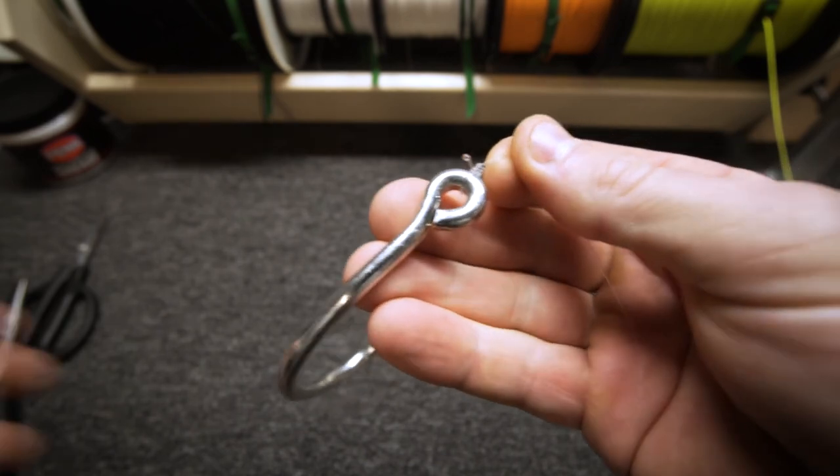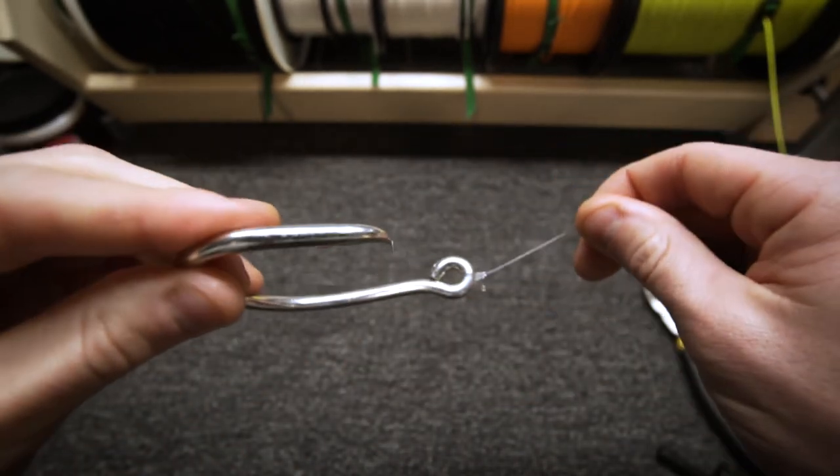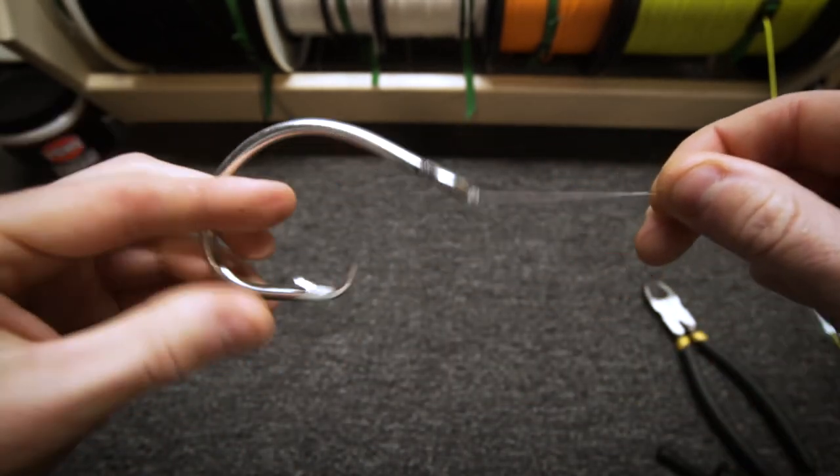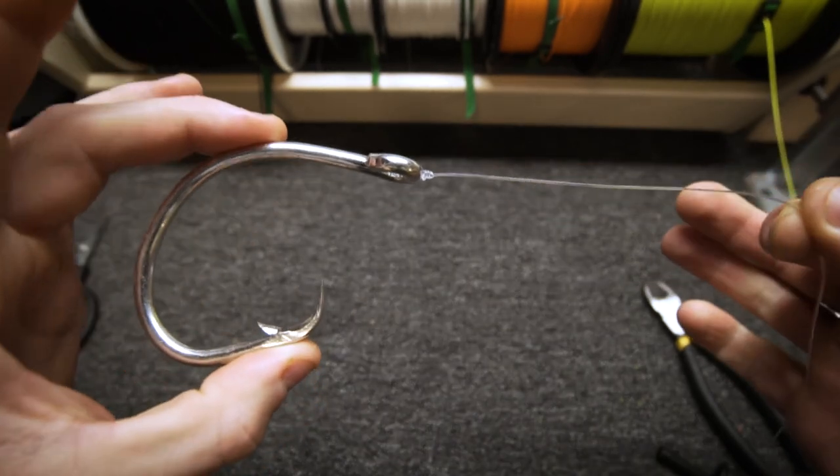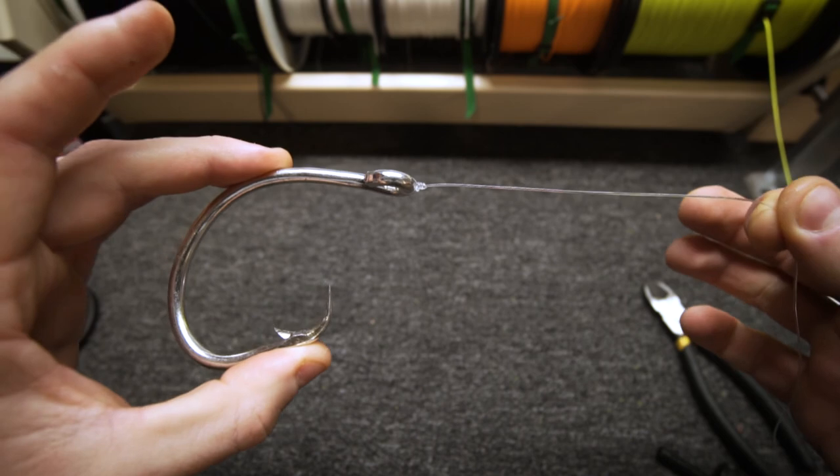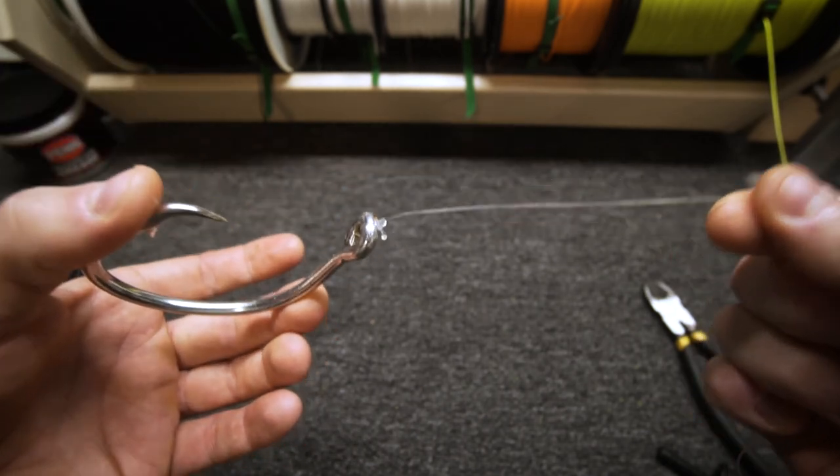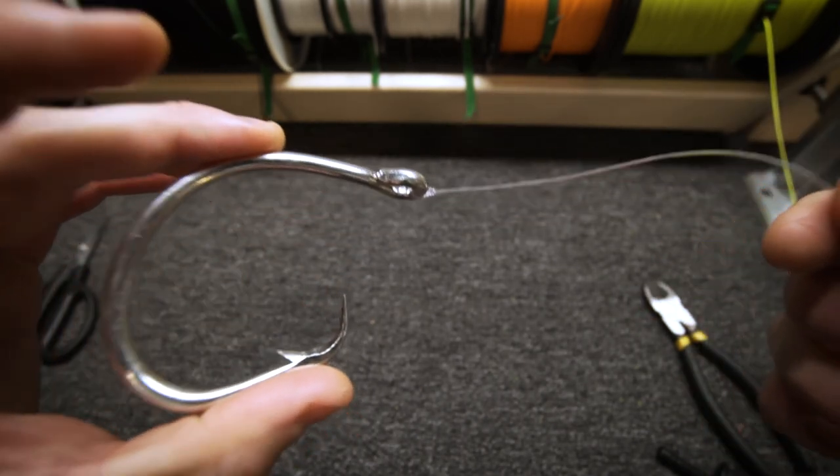That's pretty much it guys. That is the improved clinch and the clinch, the fisherman's knot. Super awesome knot, I use it all the time. This is the main knot that I use for mono and for fluorocarbon.